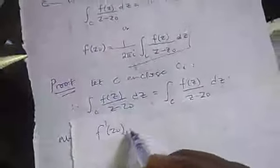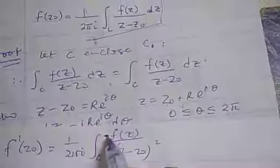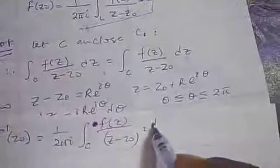Now if we decide to differentiate the Cauchy Integral Formula further, f′(z₀) will be equal to 1/(2πi) times the integral over C of f(z)/(z minus z₀)² dz.